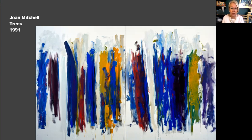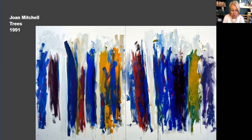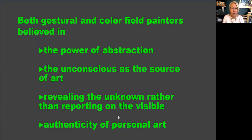Now we're going to shift gears and move to the other end of the spectrum — the smooth operators who give up wild surface agitation for large swaths of pure color. The dichotomy is not always as clear as we might like. Both the gesturalists like Pollock, de Kooning, and Mitchell, and the color-focused painters were united by their belief in the power of abstraction — that art's role was to reveal the unknown rather than report on the visible, and that an authentic painting expressed the artist's personality. And so we're going to start with the king of color: Mark Rothko.